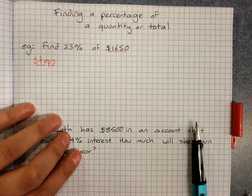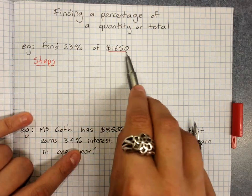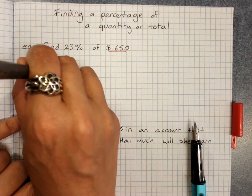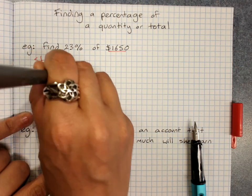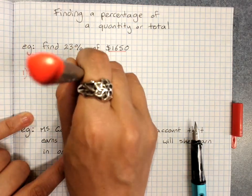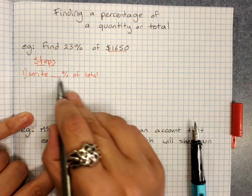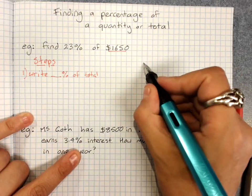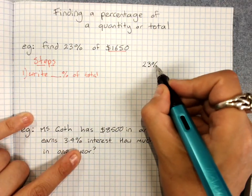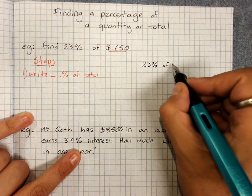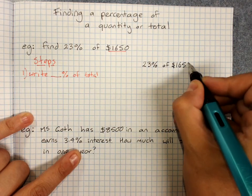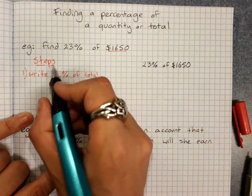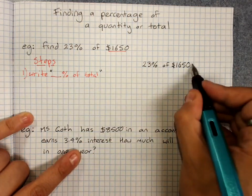So my steps are write the question and this is actually really important. X percent of total. So when we write the question here I'm going to write 23% of 1650. That's what I mean. Write the percentage of the total and you write it just like that with an equal sign.